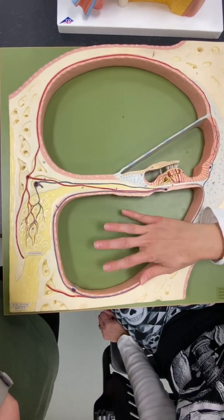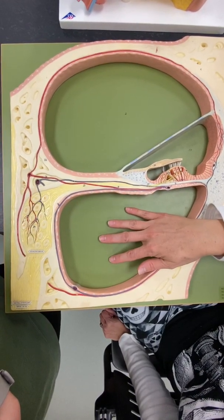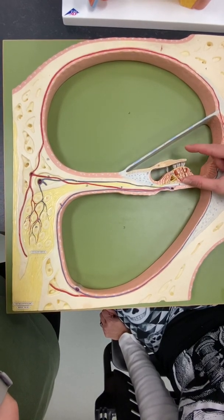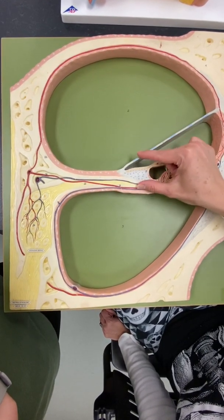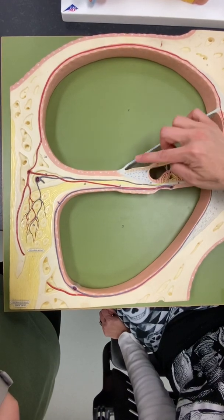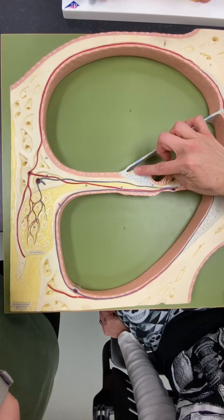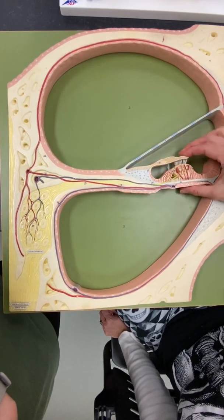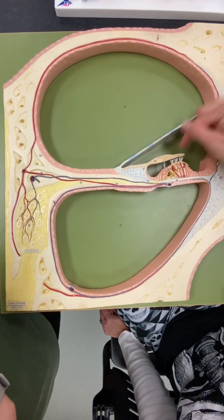And then, we have the spiral organ of Corti, which, if you took a rectangle, it kind of encompasses this part right there, which includes part of this guy right here, which is the tectorial membrane, which I think looks like a diving board.